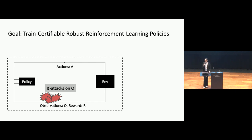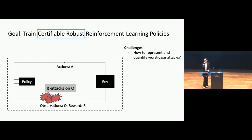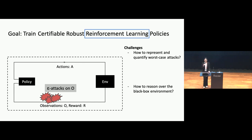When we want to do certified reinforcement learning, we find two main challenges. First, we want to cover all potential attacks in the epsilon domain — how should we represent and quantify these worst-case attacks? Second, in the reinforcement learning setting, to do certifiable reasoning we need to reason over the interaction between the policy and the environment. However, in reinforcement learning we usually do not have any prior knowledge about the environment, meaning we cannot certify over a black-box environment. How should we deal with that?